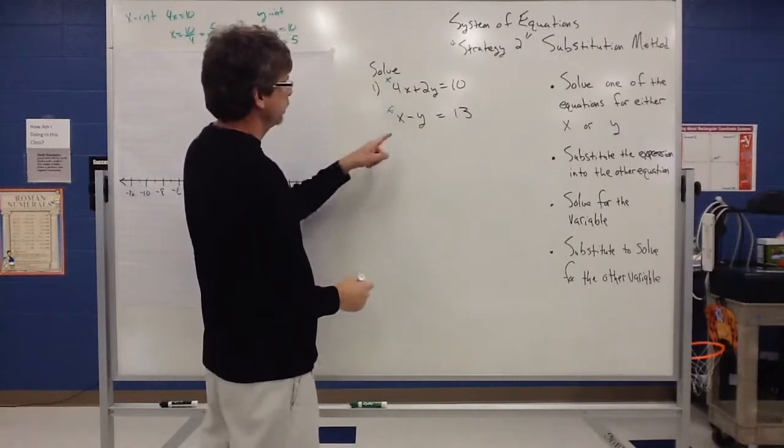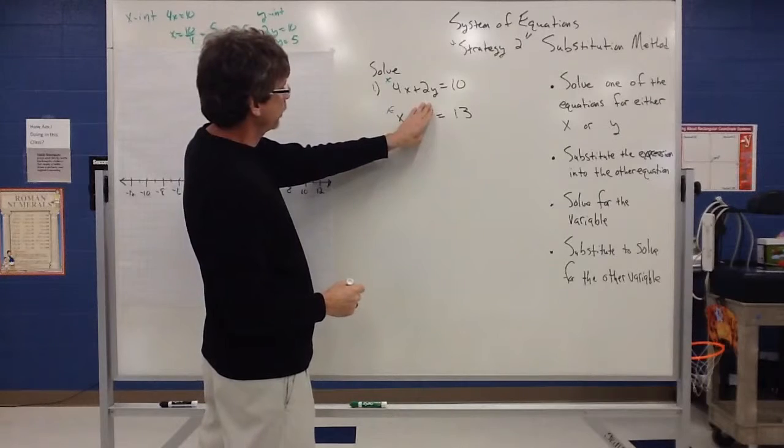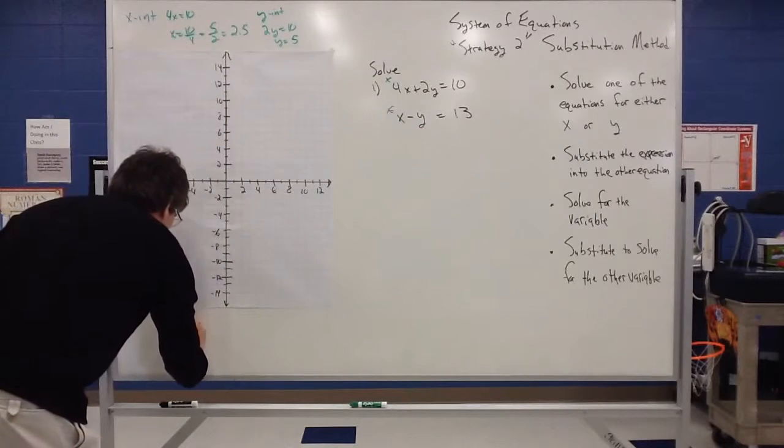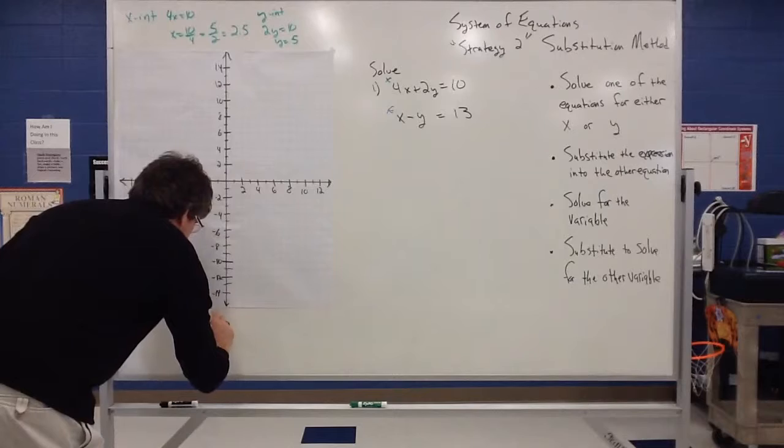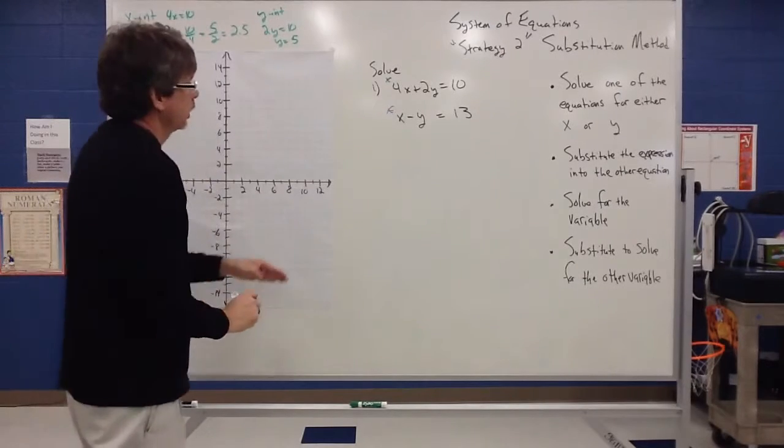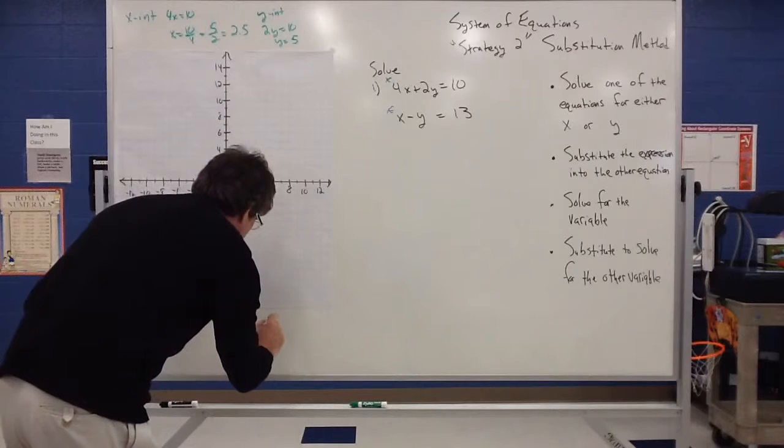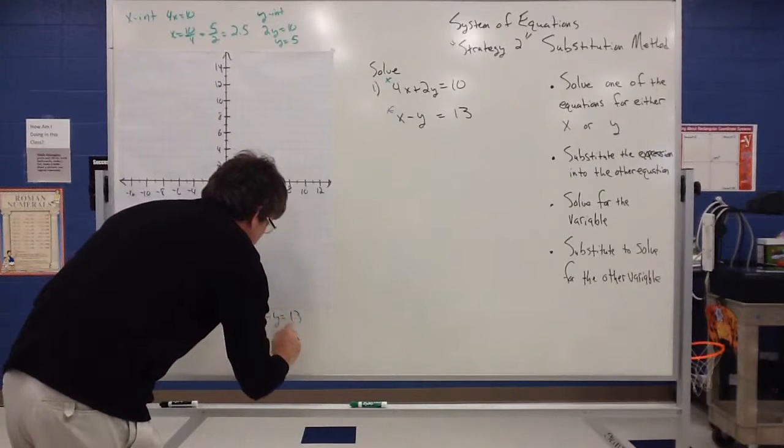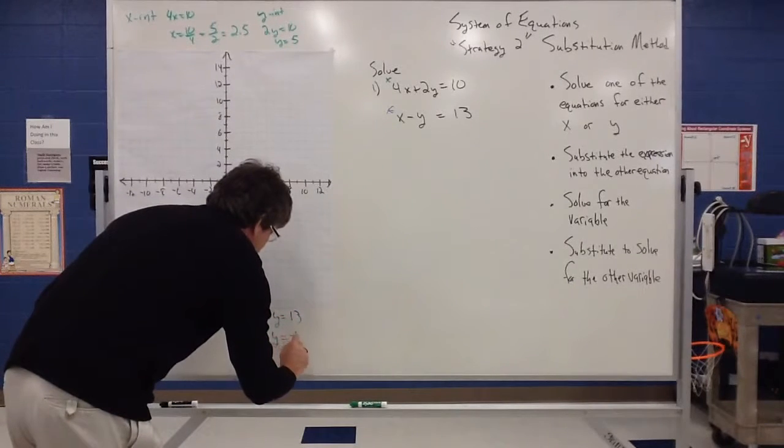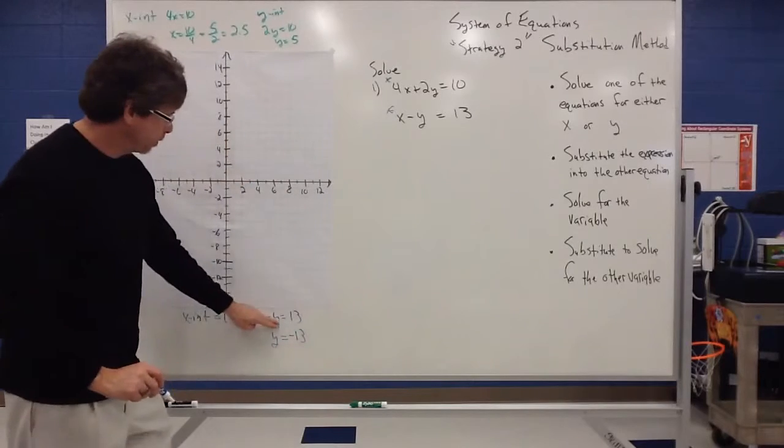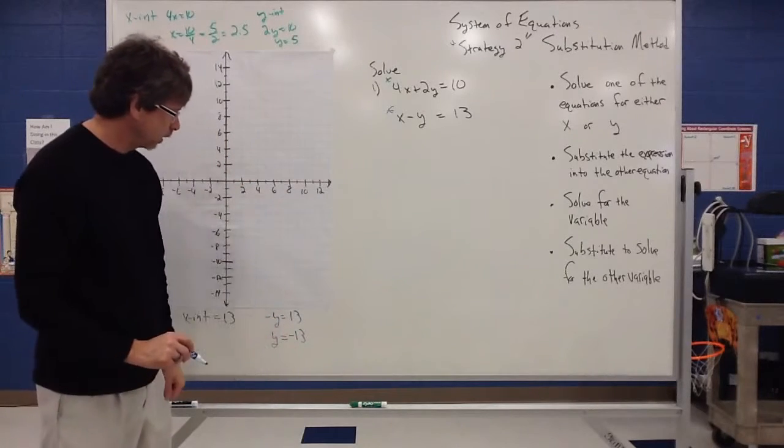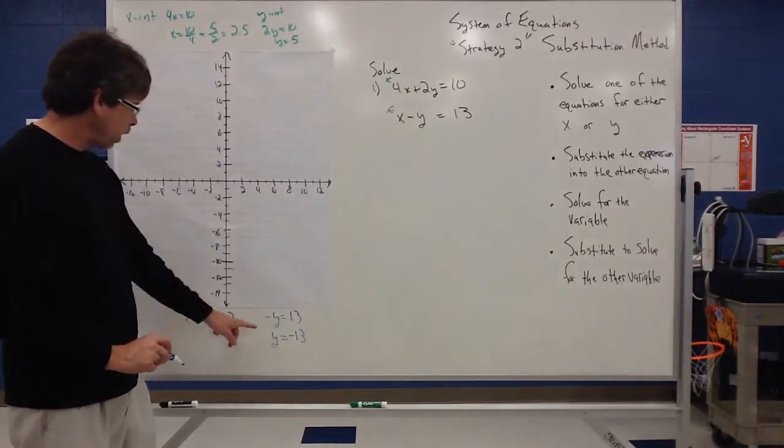The second equation, I set y equal 0, I get x equals 13. So the x intercept is 13. And if I set x equal to 0, I get negative y equals 13. So y would equal actually a negative 13. So if I flip both sides, I get my y is equal to negative 13. So now I've got the x and y intercepts.